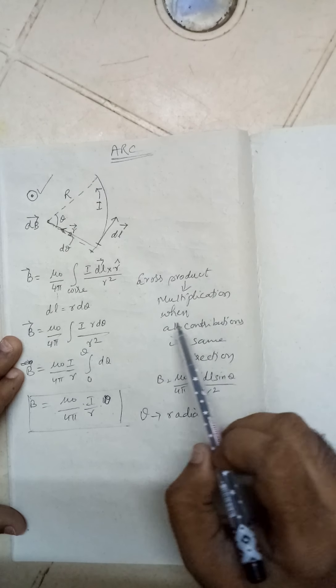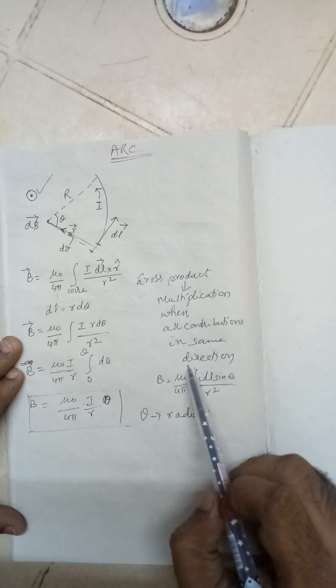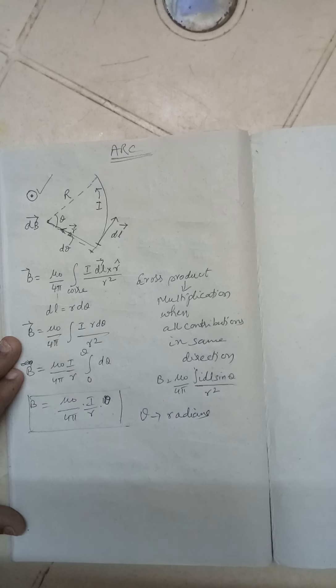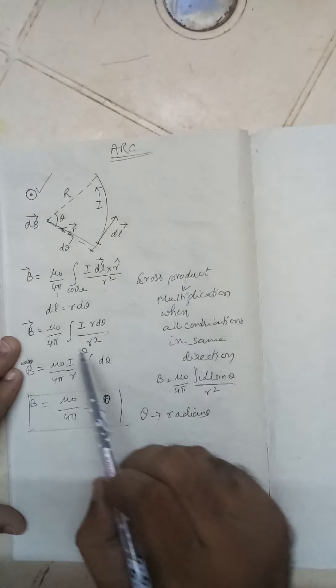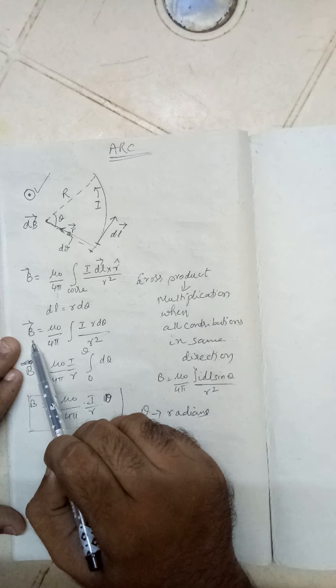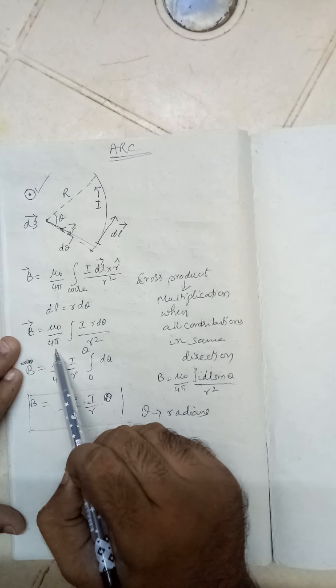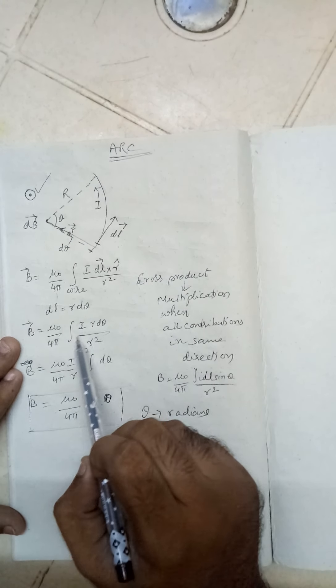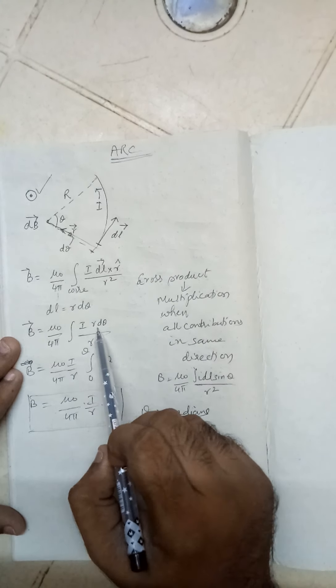So B vector will be equal to mu_0 by 4 pi, integration i r d theta by r square. r d theta is the dl value.